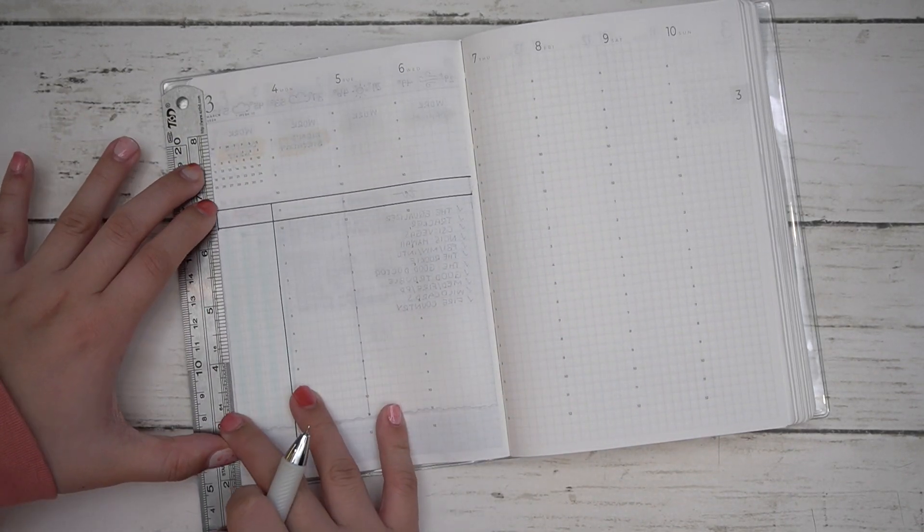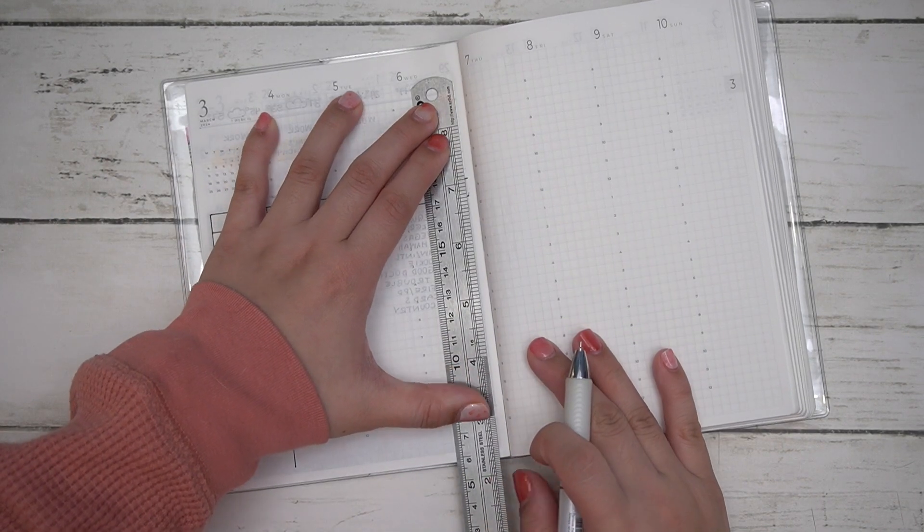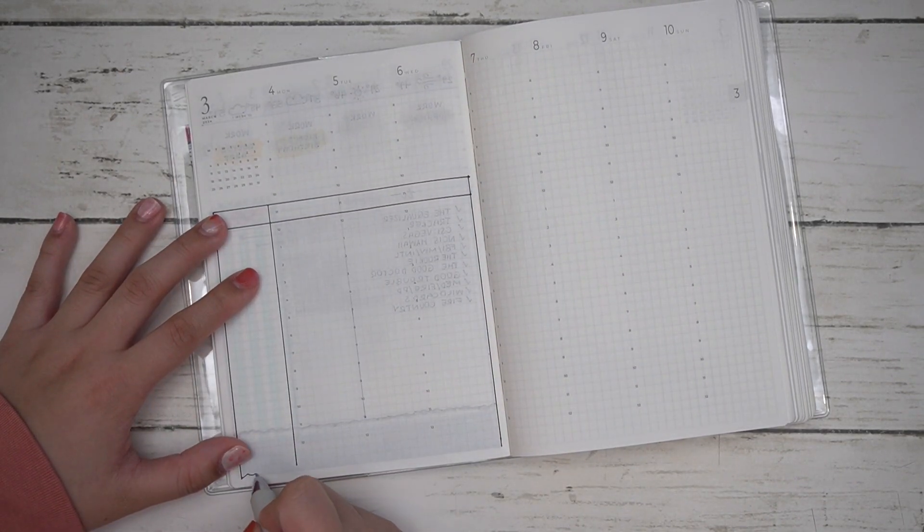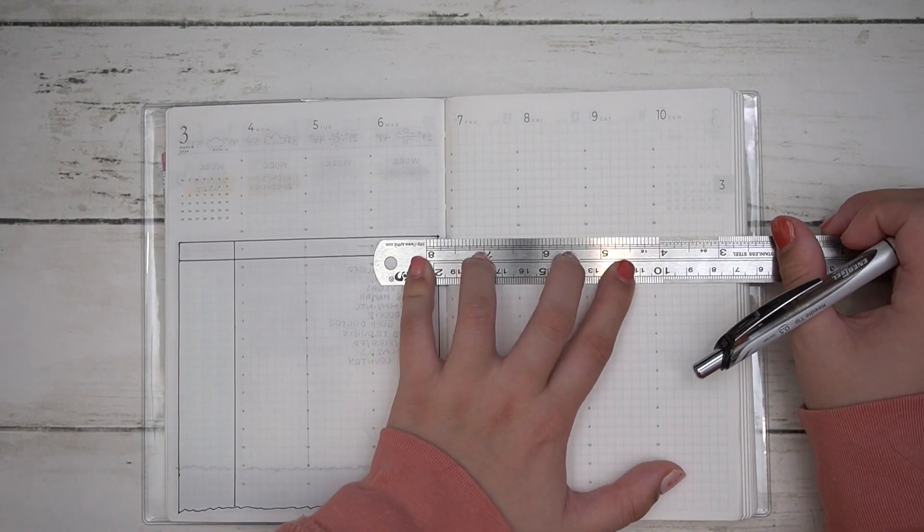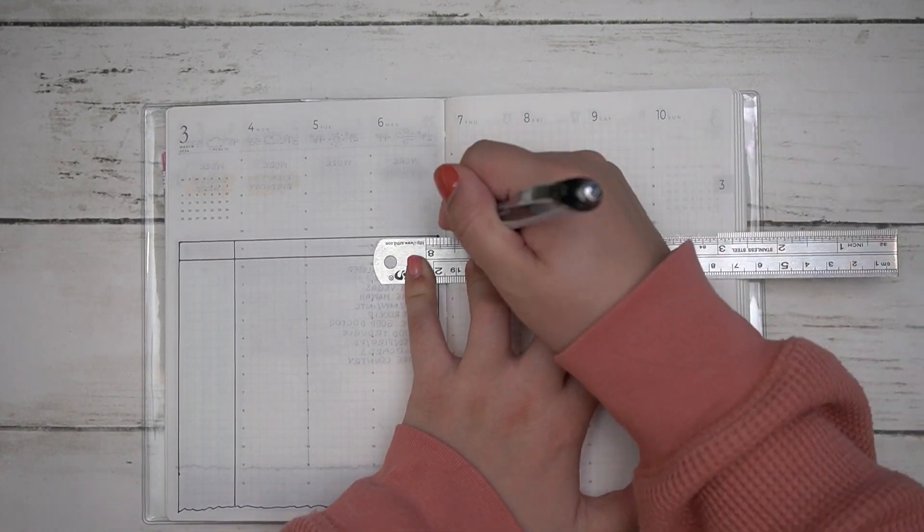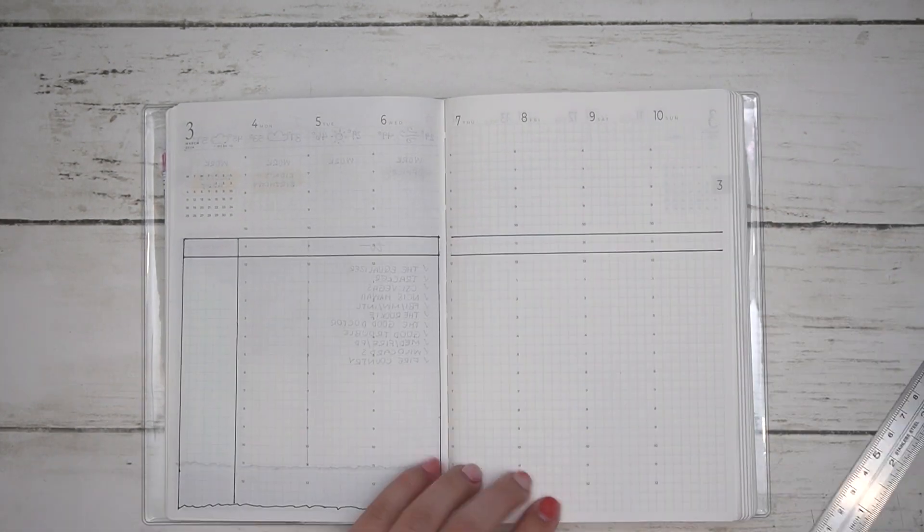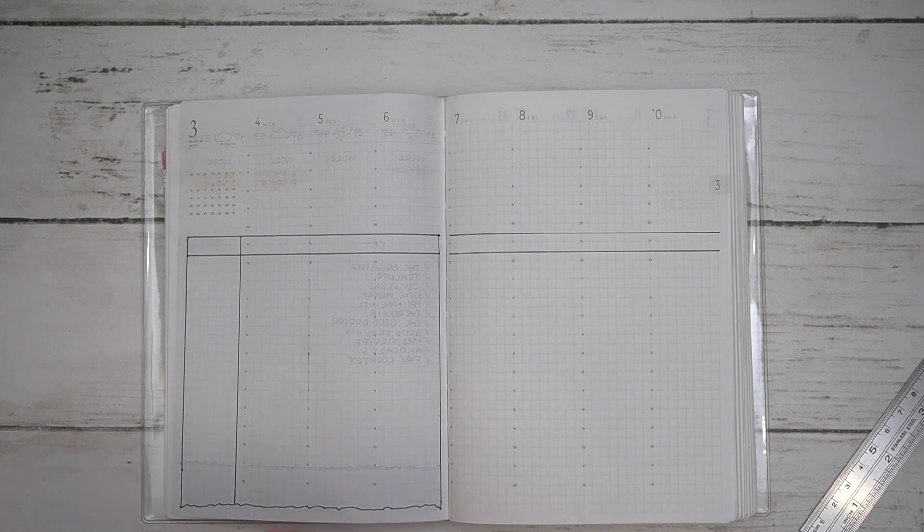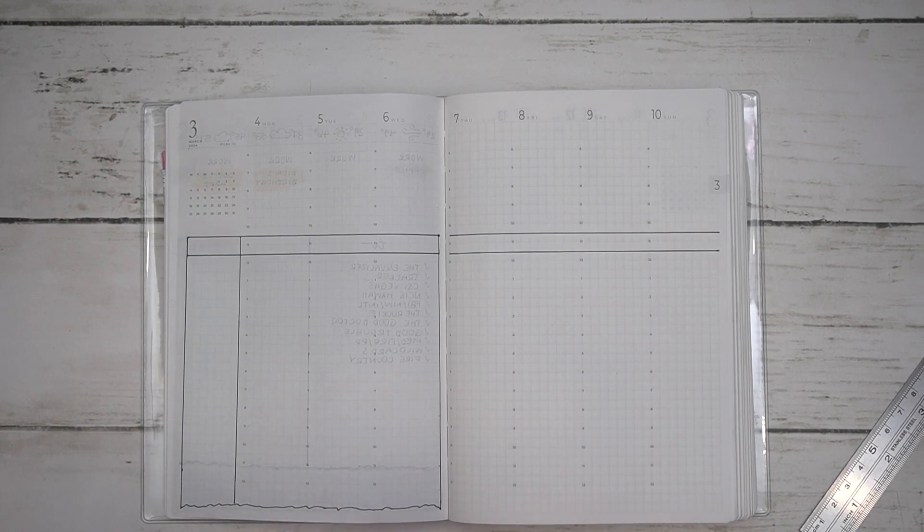On the right side I actually changed something different. She usually tracks her laundry and journaling, but for me I don't really need to do that because I don't journal like I need to track journaling. If I want to journal I'll just journal. So on the right side I just divided the box into two boxes and put down a 15 millimeter washi tape as well.